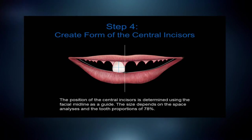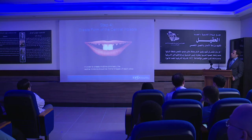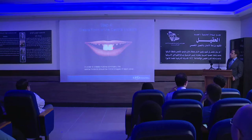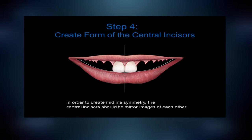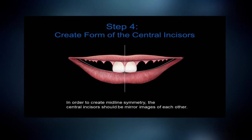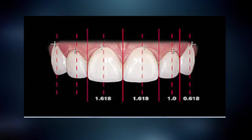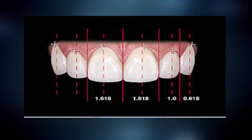Once we create one central, the other central will be a mirror image — exactly symmetrical. The laterals and canines are sized according to the golden proportion: the lateral is 1, the central is 1.6, and the mesial part of the canine is 0.6.